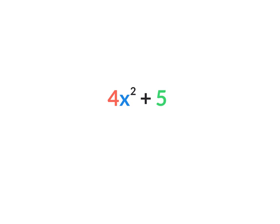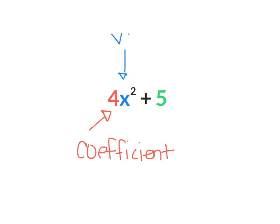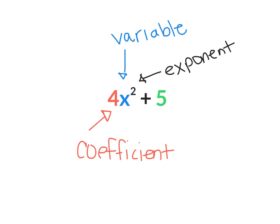We're going to identify parts of an expression. My 4 is my coefficient, because it's in front of the variable. My x is my variable. My 2 is my exponent. And the 5 is the constant. Those are the parts of an expression.